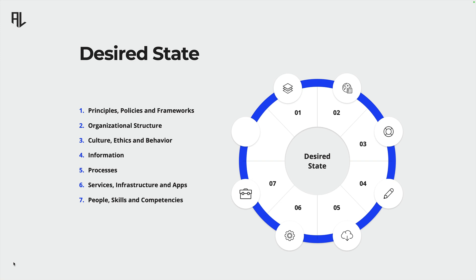Then we have culture, ethics, and behavior. The human element is often the most unpredictable in security, making a culture of awareness and ethical behavior crucial. This means fostering an environment where security is everyone's responsibility and ethical practices are the norm.